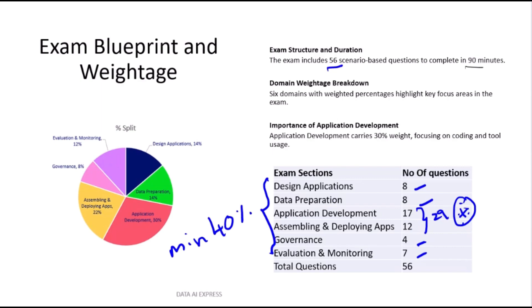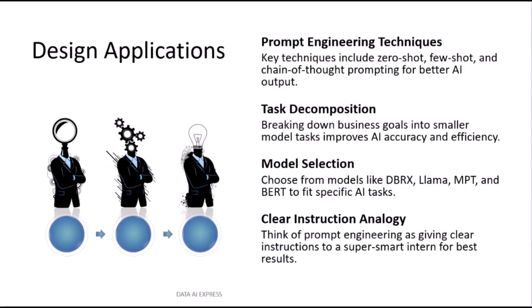First, Designing Applications. This is all about planning your AI before you write a single line of code. They will ask how you would design an AI application using Generative AI. What prompting techniques would you use? You must know the difference between zero-shot, few-shot, and especially chain-of-thought prompting. How do you decompose a giant business problem into smaller manageable tasks for the LLM? And of course, model selection — when do you use built-in Databricks models like DBRX, what parameter size do you need, and when would you use a specialized model like Whisper for audio?